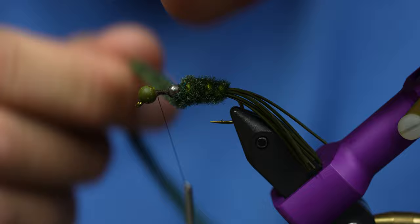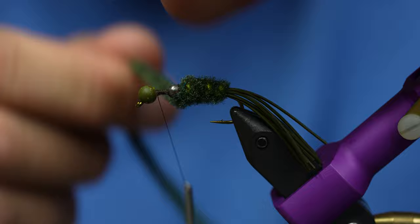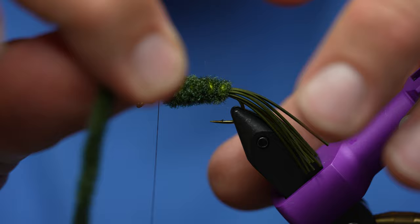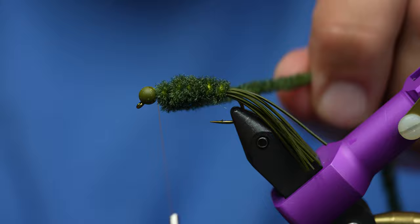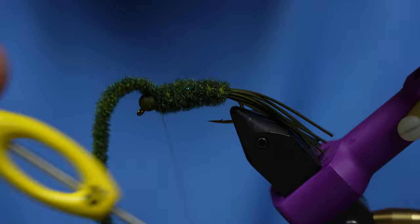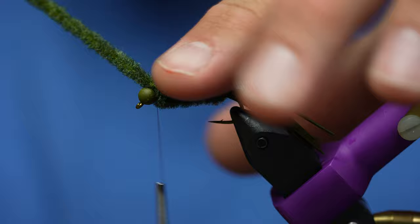We call it the Stanky Leg around here. Once you get up here, that chenille is going to want to bounce and slide off the front of that tungsten, and it's going to go from thick to thin. What I'm going to do here is put two turns of chenille right on top of themselves and then finish up with one final turn right behind the bead. That way it keeps it nice and chunky and fat.